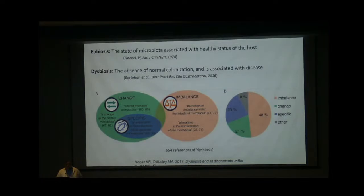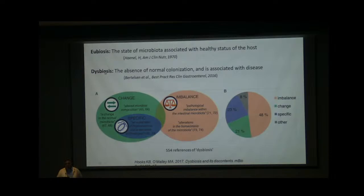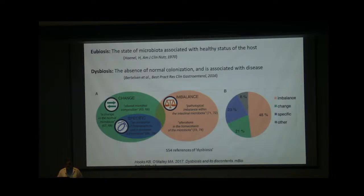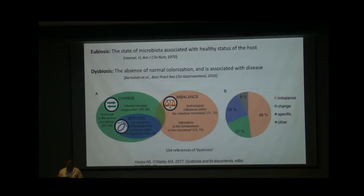Two other terms commonly encountered are eubiosis and dysbiosis. Since there is no clear definition of 'healthy' and only 'unhealthy' can be identified by disease presence, eubiosis and dysbiosis are defined similarly. Eubiosis is the state of microbiota associated with the healthy status of the host. However, in a couple of studies we are currently undertaking, almost 30 percent of screened healthy individuals had some disease — they were thoroughly screened for hepatic, intestinal, kidney-related, or other disorders, and were rejected from inclusion because they had some disorder without presenting clear symptoms.